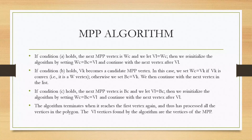The algorithm terminates when it reaches the first vertex again, and thus has processed all the vertices in the polygon. The VL vertices formed by the algorithm are the vertices of the MPP.